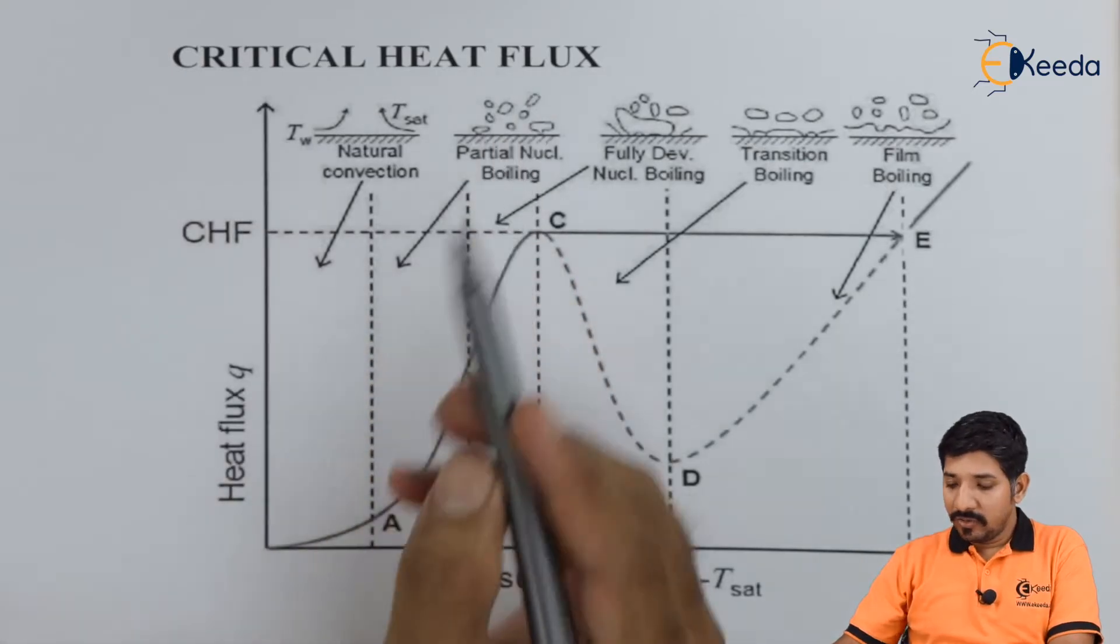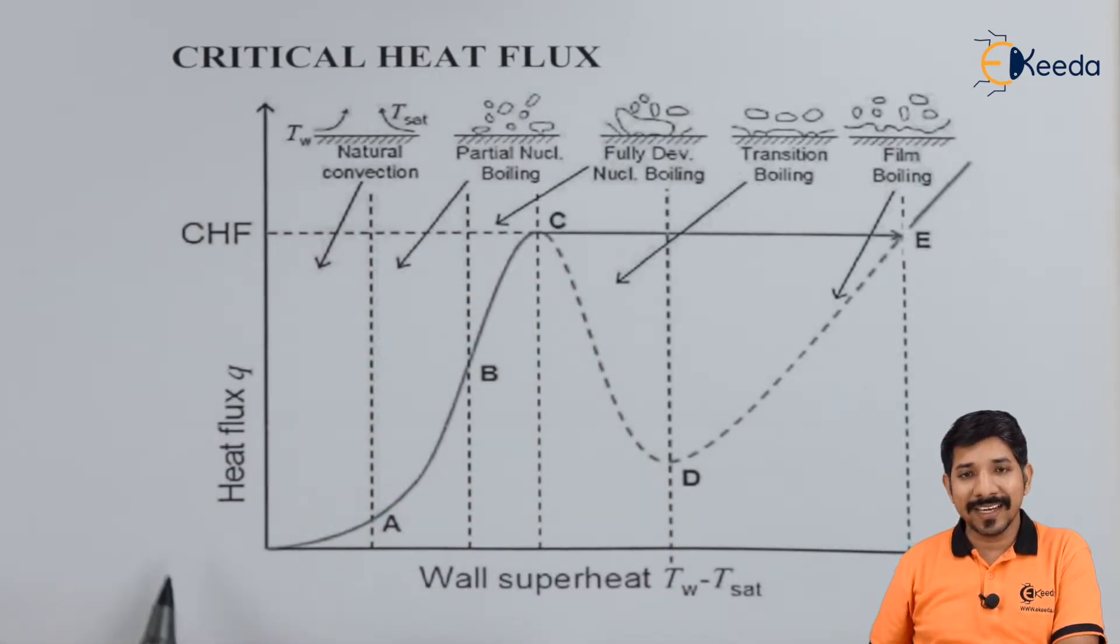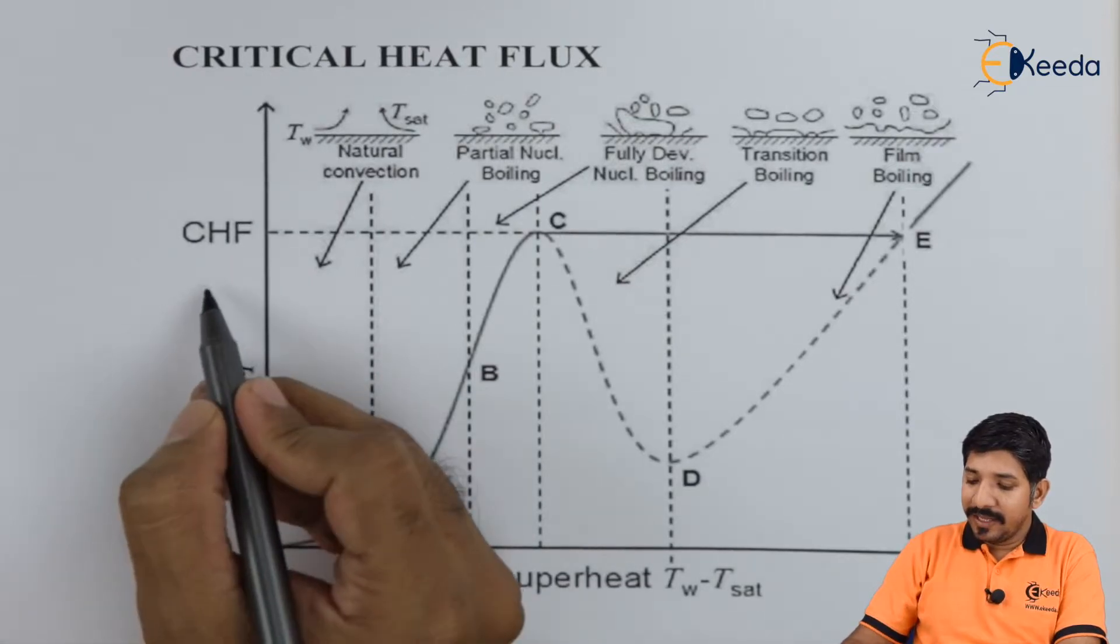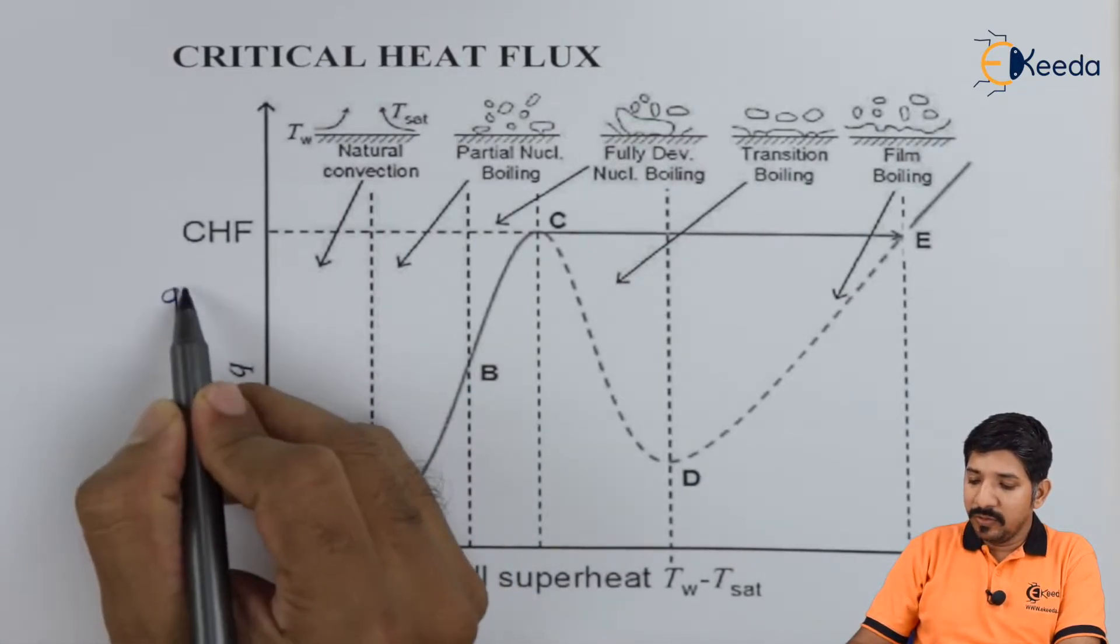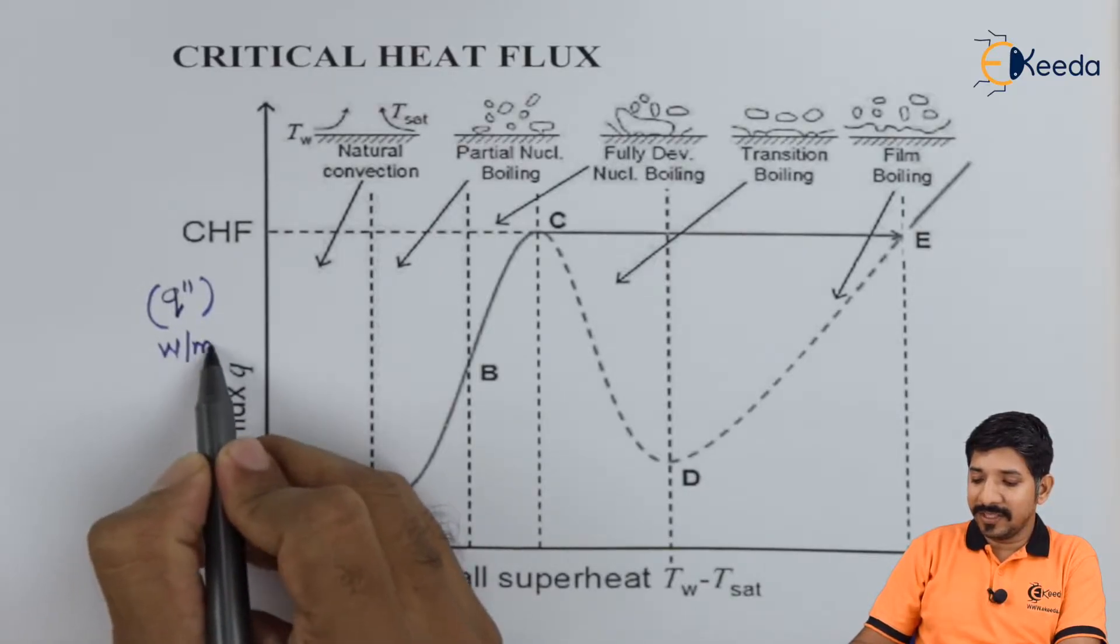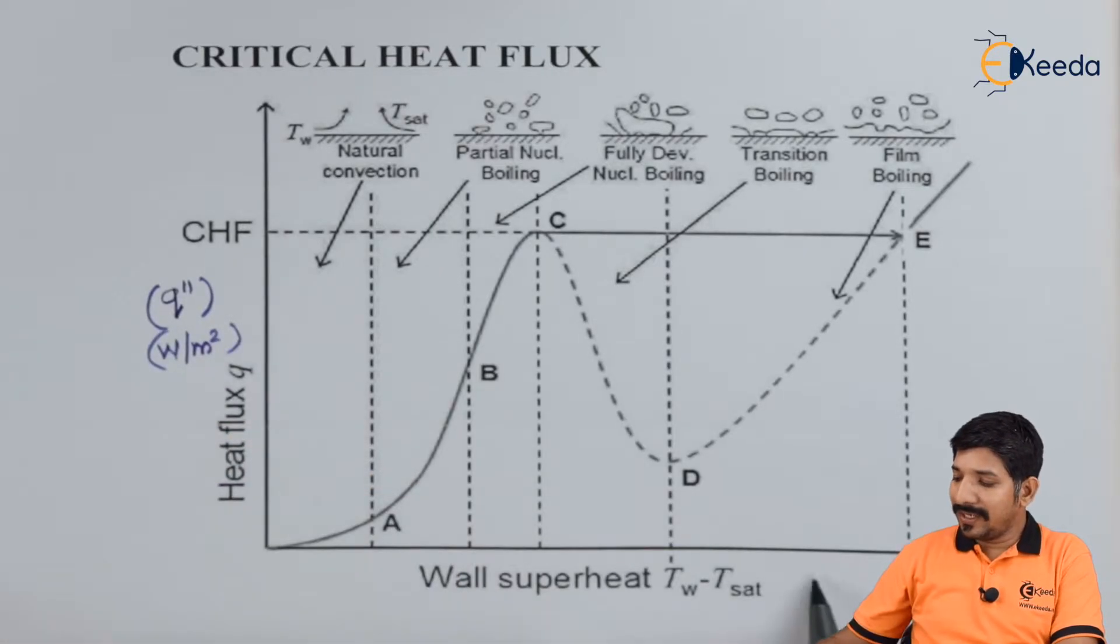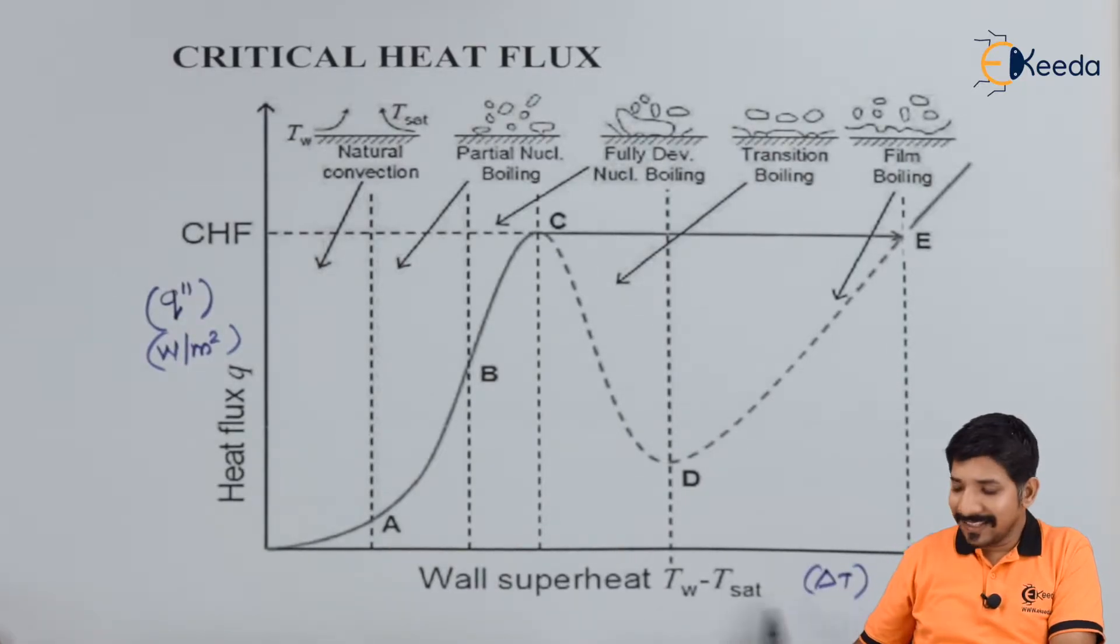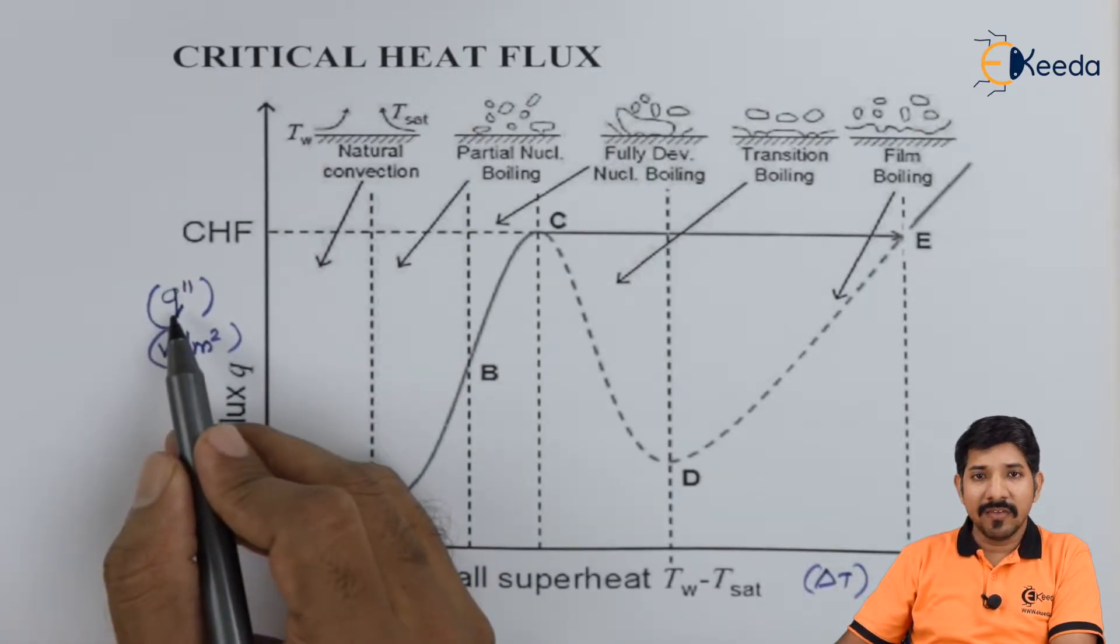Now critical heat flux. For that, we need to first understand the Nukiyama curve. The Nukiyama curve is plotted with respect to Q', which is the heat flux in watts per meter squared, versus delta T. Delta T is the wall temperature T_W minus the saturation temperature. So the difference in these two versus the heat transfer flux.